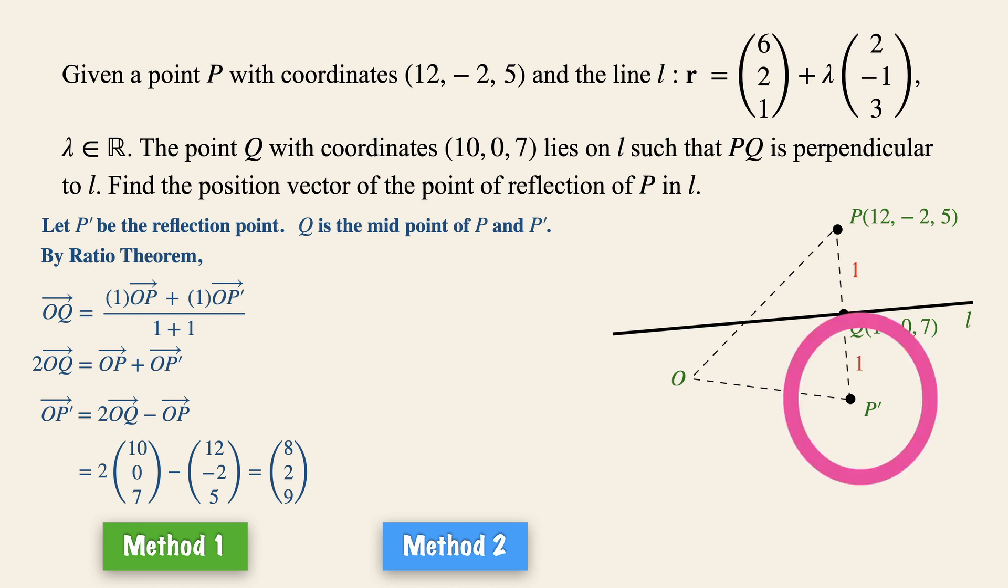Now in method 2, again, we are starting off by letting P' be the reflection point. Then let's imagine two lines of equal lengths in our minds and place them over here.